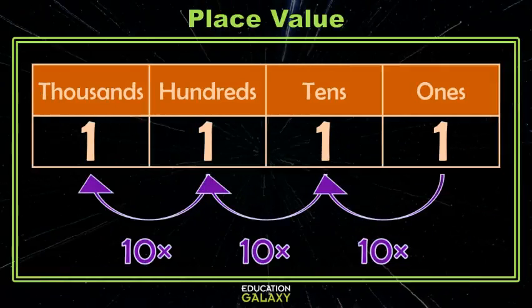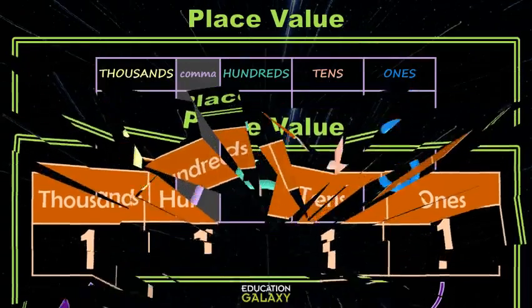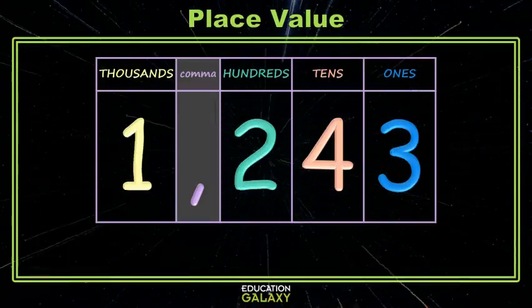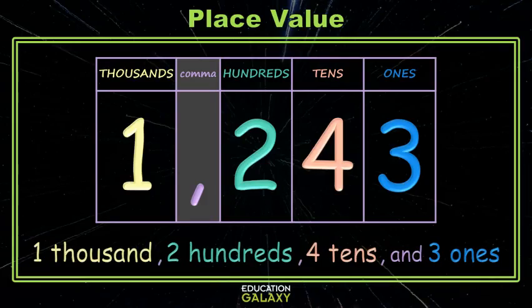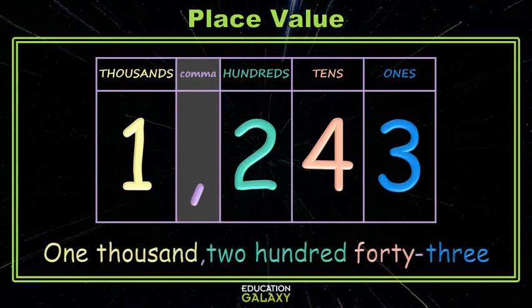Got it? Good. Now let's talk about other fun things we can do with place value. We can use place value to help us name and represent numbers. We can use the place value chart to help us identify a number by place value. We have 1 thousand, 2 hundreds, 4 tens, and 3 ones. We can also identify a number by the way we say it, which is called the word form of a number. This number is 1,243.